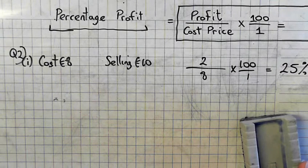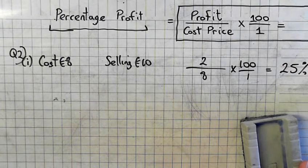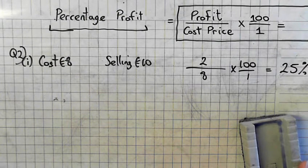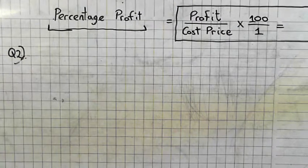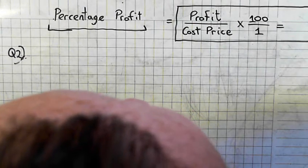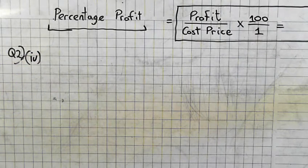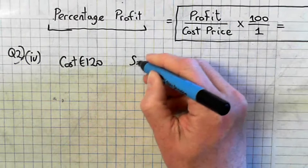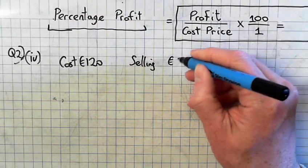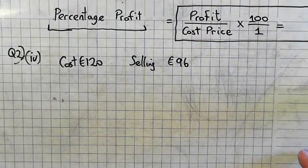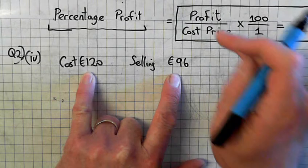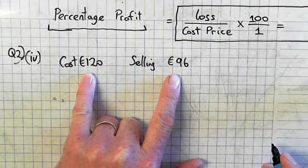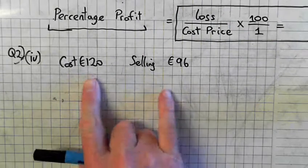We'll have a look at an example of whether it was a loss. Question 2 part (iv). The cost price, or buying price, was €120. But the selling price was €96. So is that a profit or a loss? Loss. So first of all we find how much the loss was. So instead of a profit it's a loss. How much was the loss? 24. The difference is 24.